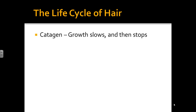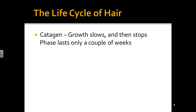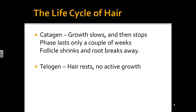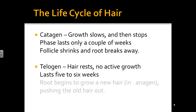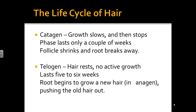The next stage is catagen. This is when the growth slows down and then stops — it only lasts a couple of weeks. The follicle shrinks away from the hair and the root starts to break free. The last stage is the telogen stage, when the hair just rests inside the follicle. It's not really attached — like hair you find in your brush after brushing. This can last 5–6 weeks. Eventually the root will make a new hair and start pushing the old hair out, similar to when your adult teeth pushed out your baby teeth.